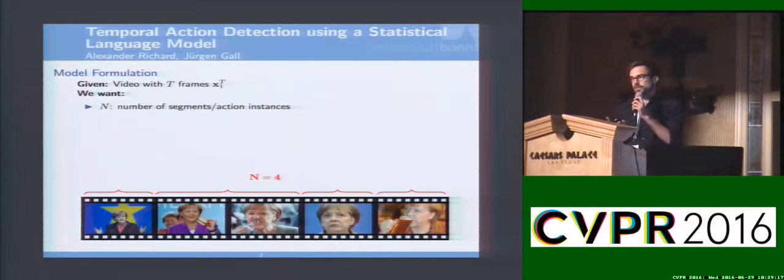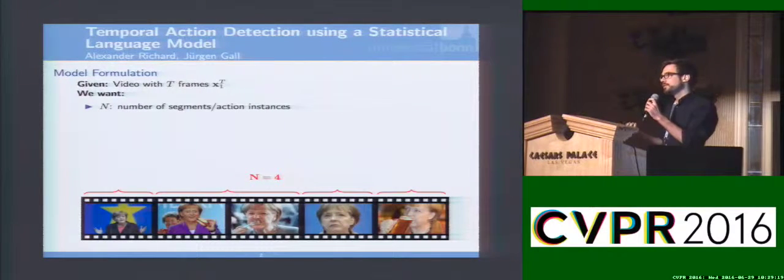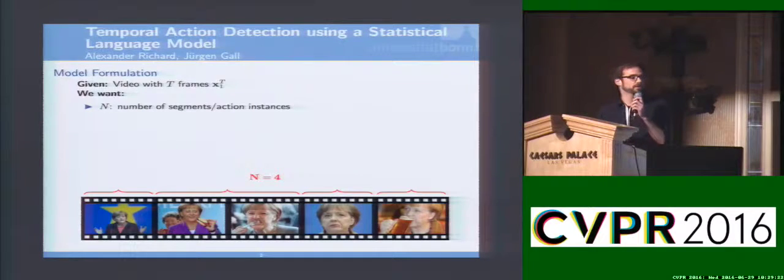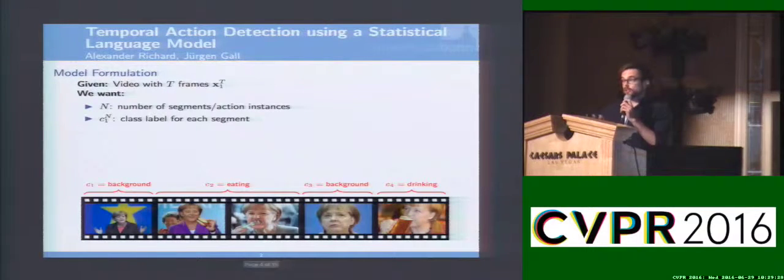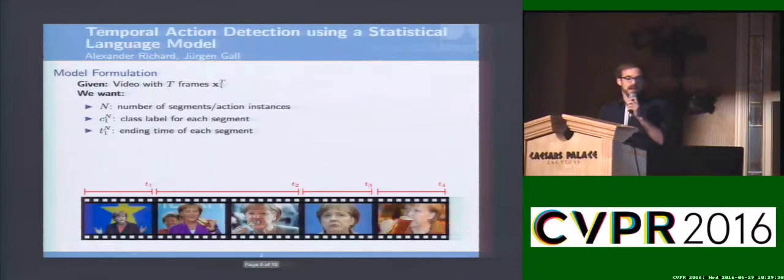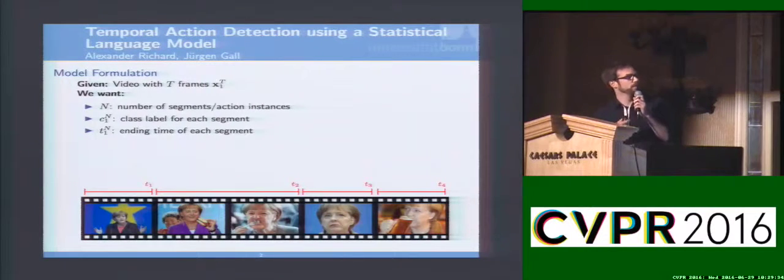Assume we are given the video X with T frames. The first thing we need to find is the number of action instances that occur in the video. For example, here we have background, eating, again background and drinking. We also need the class labels as well as the ending positions of all the segments. With these three pieces of information, the complete segmentation is fully defined.